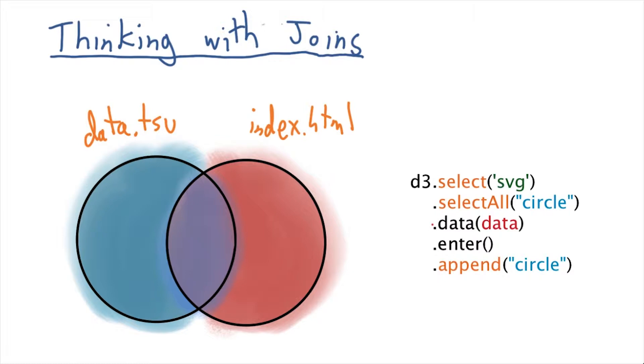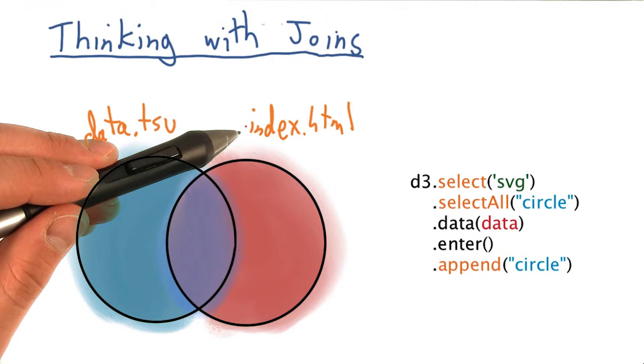The left circle here, shown in blue, represents our data file. In this case, data.tsv, and the red circle here represents our HTML page, or SVG elements on that page, index.html.